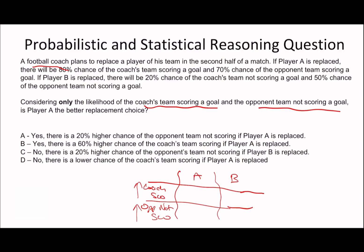So let's start reading. If a football coach plans to replace a player of his team in the second half of a match, if player A is replaced, there's an 80% chance of the coach's team scoring. So I always like to use decimals and a 70% chance of the opponent team scoring. So that's a 30% chance of the opponent team not scoring. If player B is replaced, there'll be a 20% chance of the coach's team not scoring. So that's an 80% chance of the coach's team scoring and a 50% chance of the opponent team not scoring. So we can see coach scoring is going to not be relevant here. That's not going to have an effect.